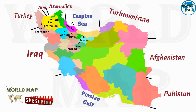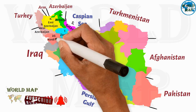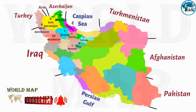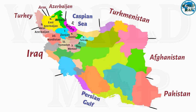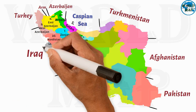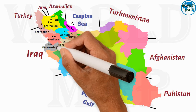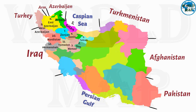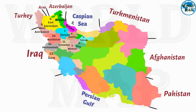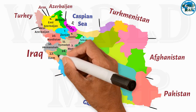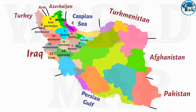Number 10: Kurdistan. Number 11: Hamadan. Number 12: Kermanshah. Number 13: Ilam. Number 14: Lorestan.